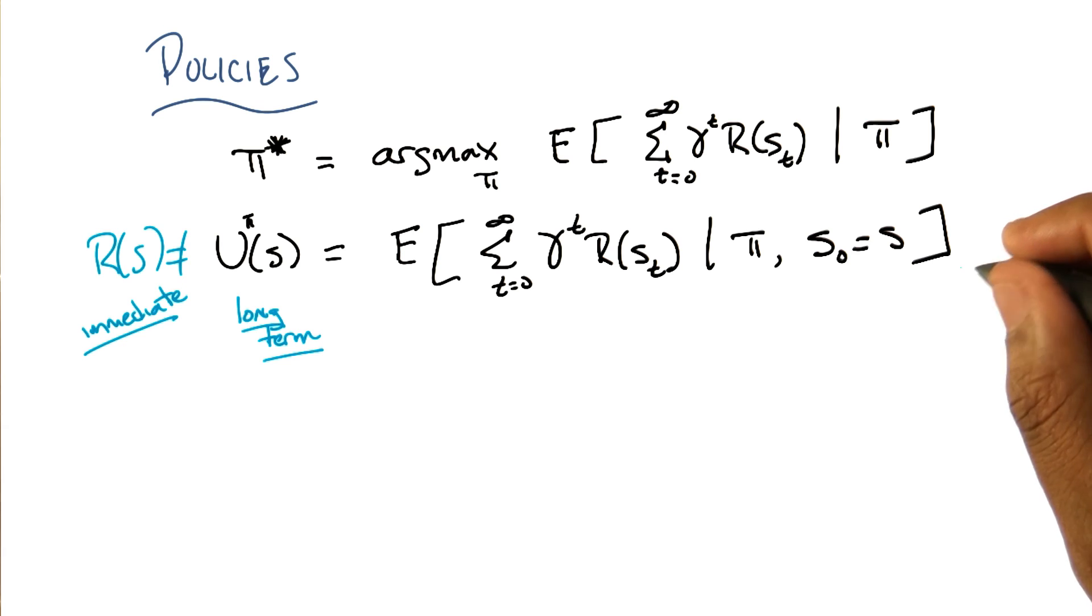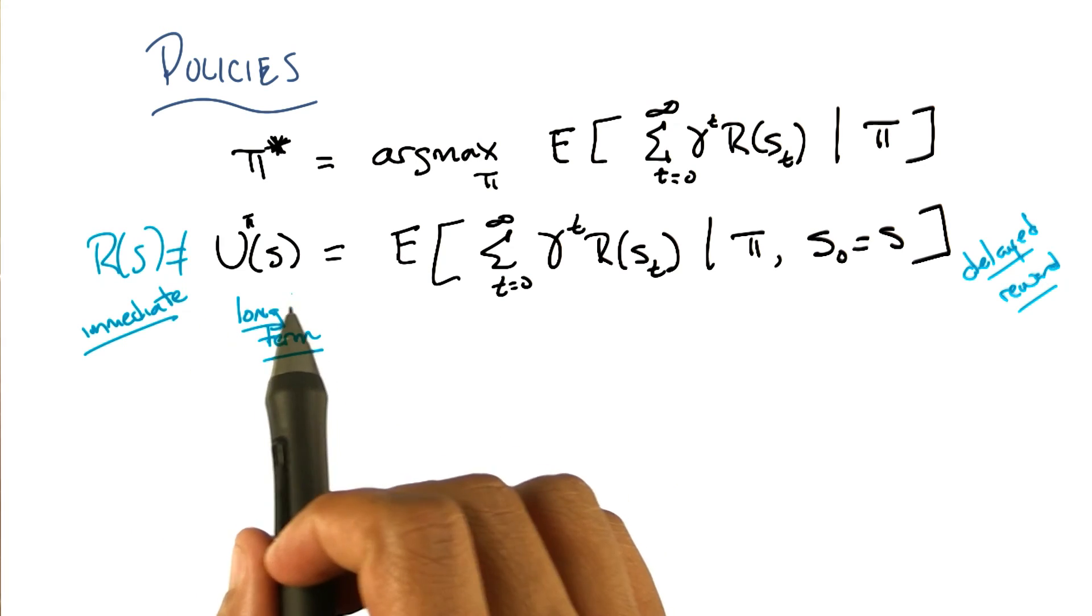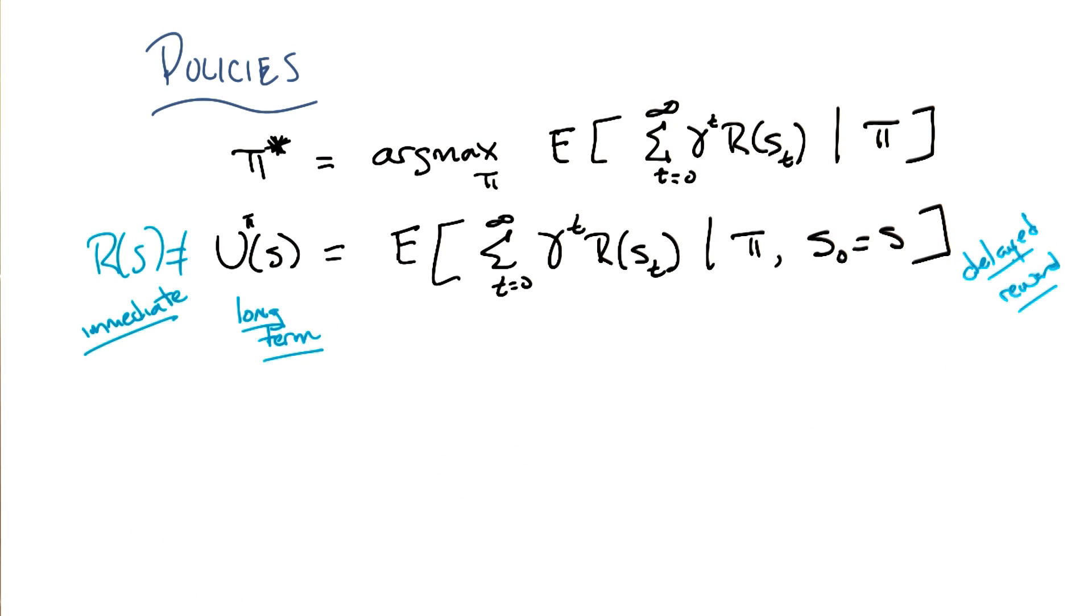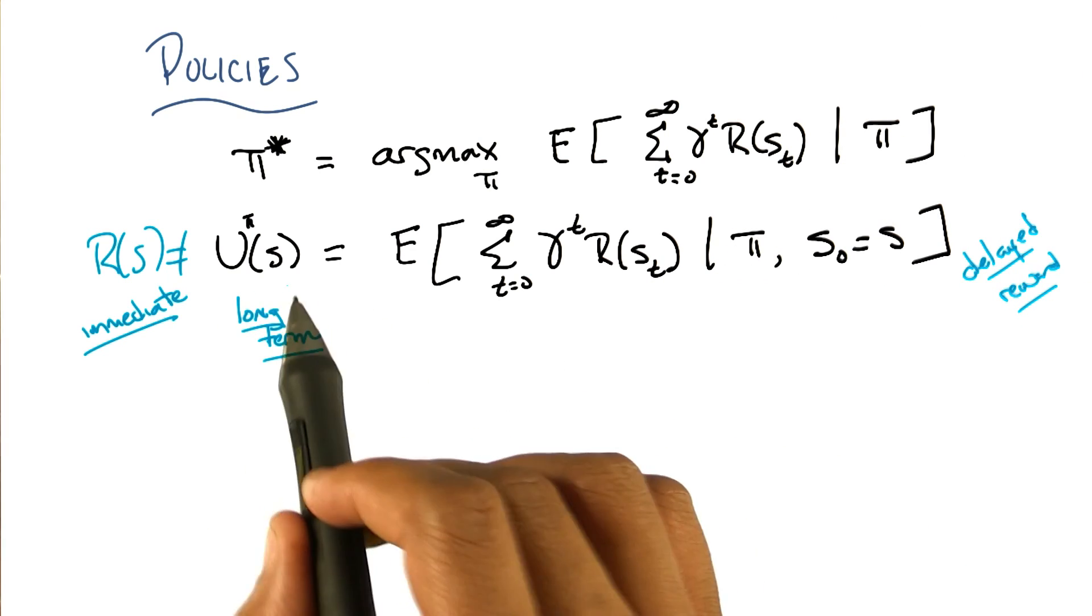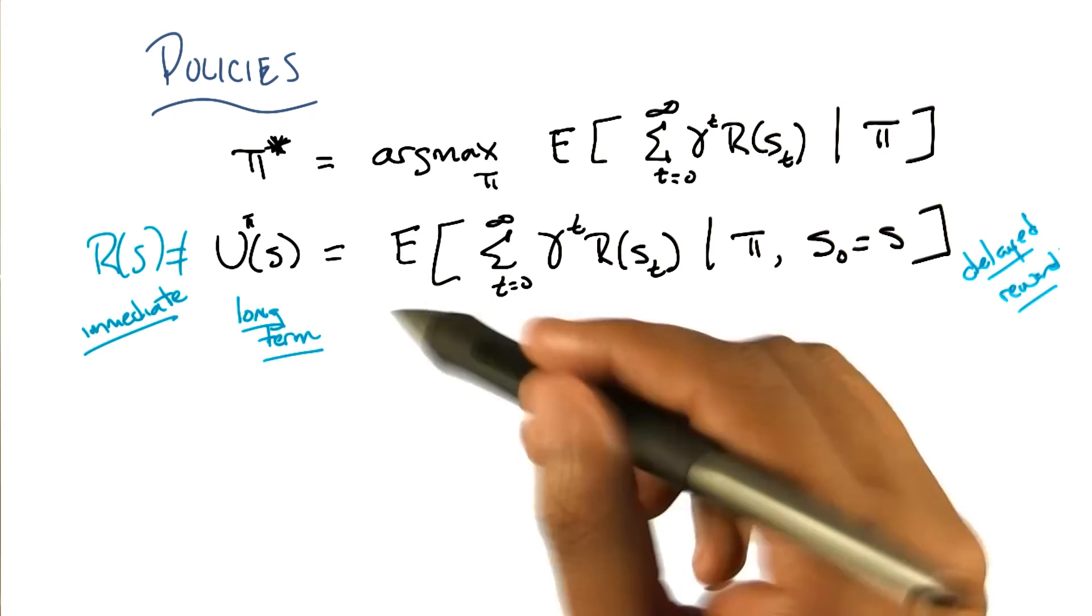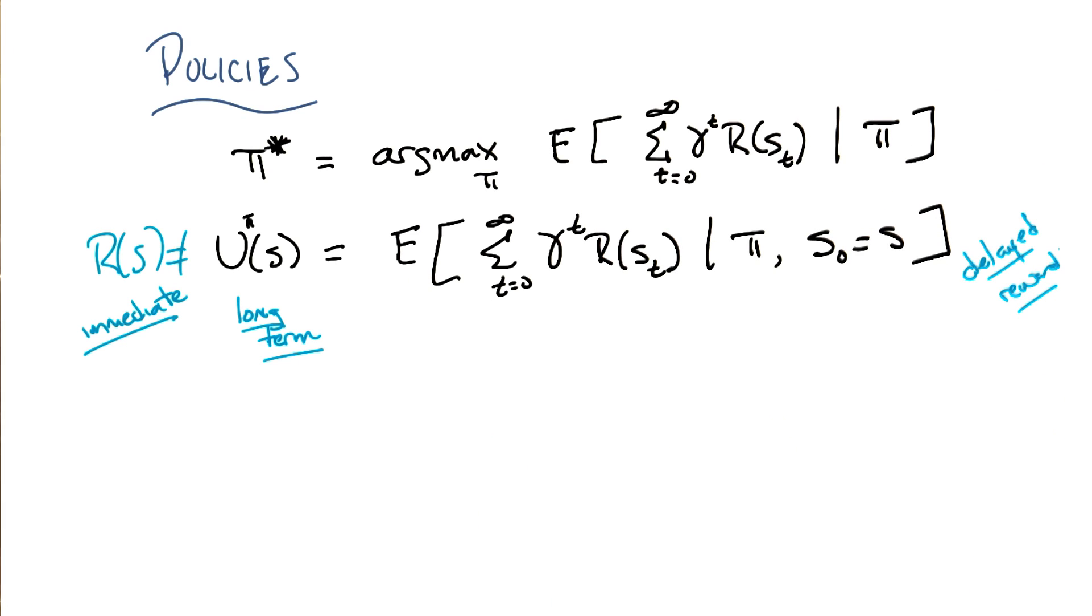And what this does, is this gets us back to what I mentioned earlier, which is this notion of delayed reward. So we have this notion of reward, but utilities are really about accounting for all delayed rewards. And if you think about that, I think you can begin to see how, given you have a mathematical expression for delayed rewards, you will be able to start dealing with the credit assignment problem. Cool. Okay. So let's keep going and write more equations.